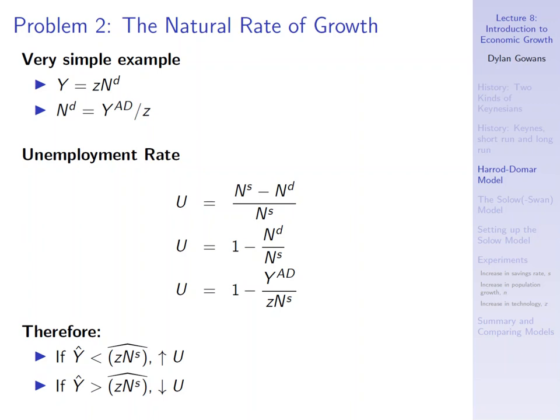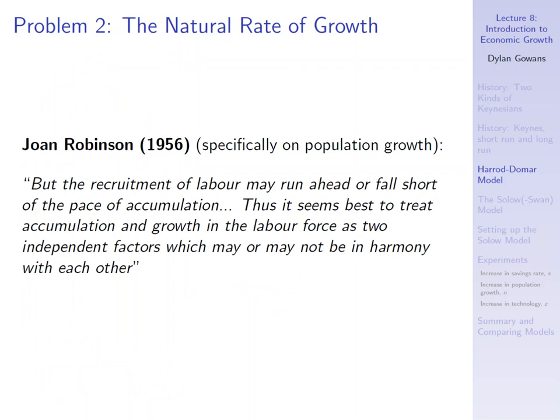These post-Keynesians recognized this problem. Joan Robinson in 1956, specifically on population growth, says: "The recruitment of labor may run ahead or fall short of the pace of accumulation. Thus it seems best to treat accumulation and growth in the labor force as two independent factors, which may or may not be in harmony with each other." So the growth in capital and in particular the growth in output need not be going at the same rate as the growth of the labor supply — and one could also include here the rate of technological progress.